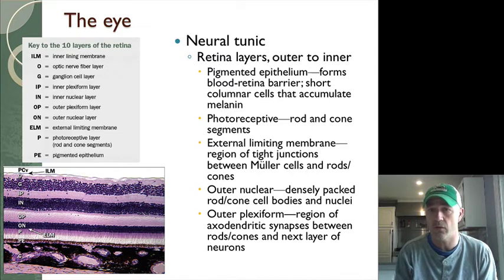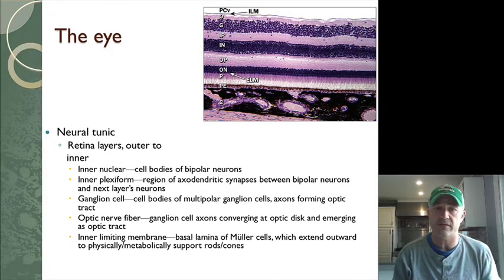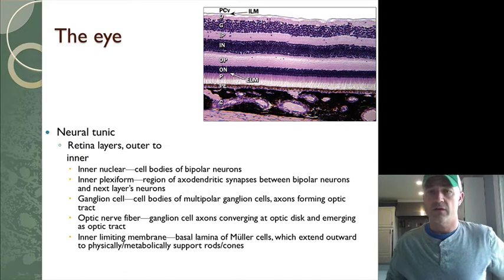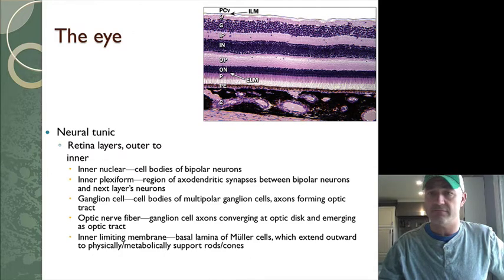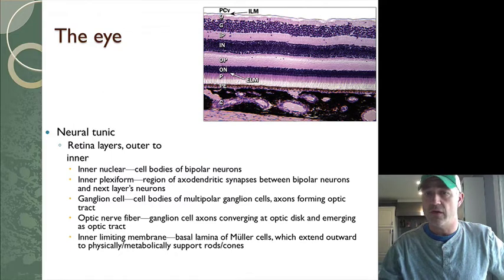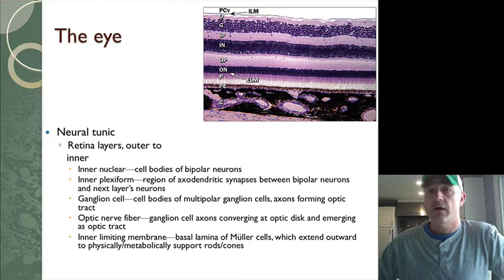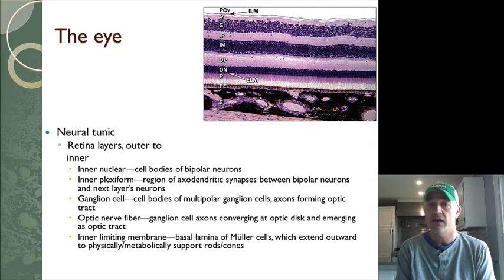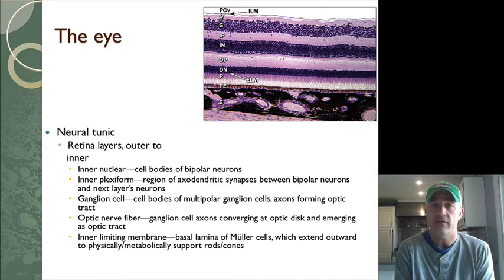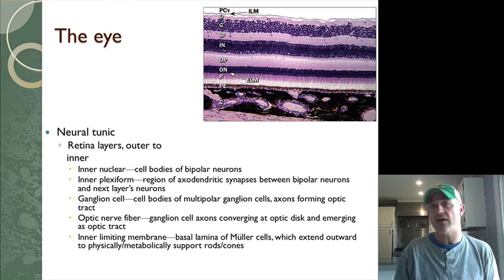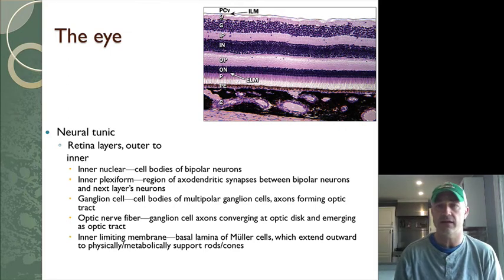The three main layers I want you to know: the P is the photoreceptor layer. Above that are three layers of nuclei — the G is the ganglion cell layer, the IN is the bipolar cell layer, and the ON is the outer nuclear layer containing the nuclei of the photoreceptors. So: photoreceptor layer, followed by bipolar layer, followed by ganglion layer. I want you to be able to identify those three layers and where the photoreceptors are.